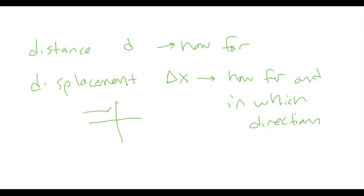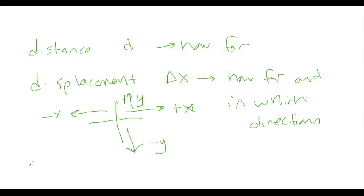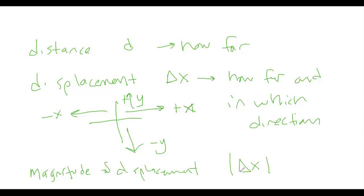If we use our Cartesian coordinate system, negative X is to the left, positive X is to the right, positive Y is up, and negative Y is down. So we have those four displacements. Displacement is how far you go from your starting point and in which direction. We also have the term magnitude of displacement, which is the absolute value of delta X. Magnitude means size — when it asks for magnitude, you're not worried about direction, only the amount.